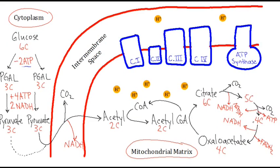That four-carbon molecule then undergoes a rearrangement to return to the four-carbon oxaloacetate molecule. In doing so, more electrons are freed up, creating yet another NADH molecule as well as a new FADH2 molecule. So the Krebs cycle has produced three NADH molecules, one ATP molecule, and one FADH2 molecule per turn. But remember the Krebs cycle happens twice, because we had two acetyls from two pyruvates. So the Krebs cycle actually produces six NADH molecules, two ATP, and two FADH2s in total.